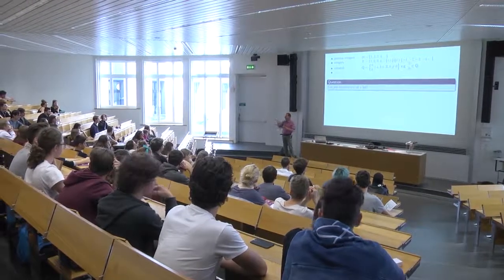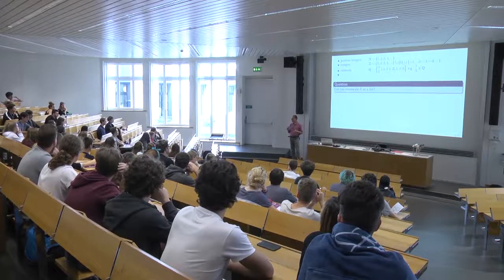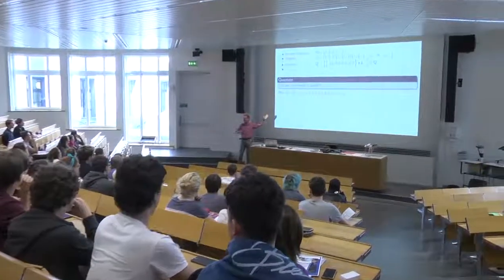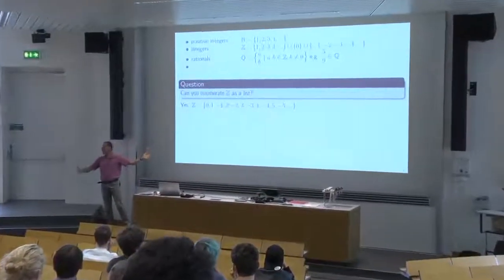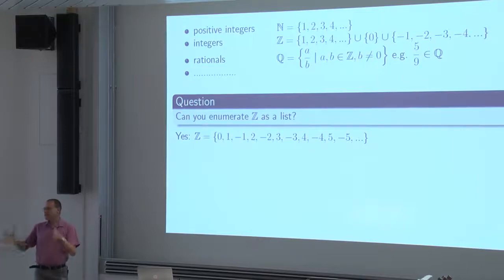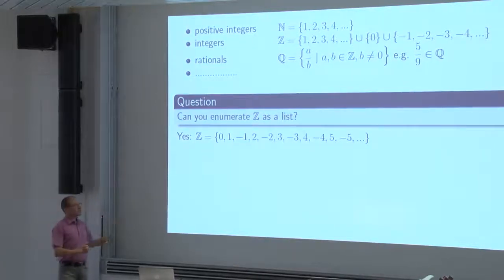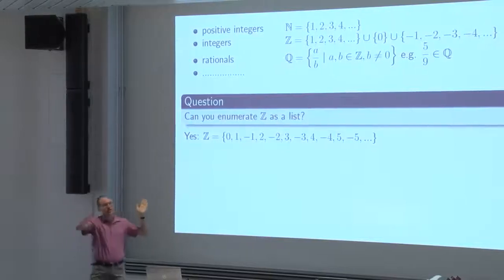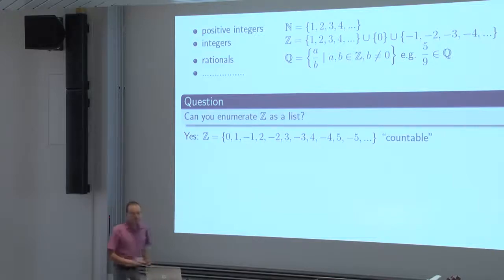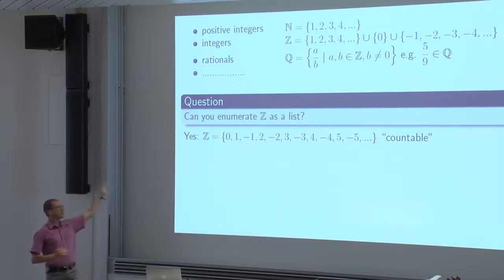I would say yes you can, if you start with zero and then take 1, minus 1, 2, minus 2, 3, minus 3, 4, minus 4, and so on. You put one integer in this box every day, and every integer sooner or later will appear in the box. Notice that they are not listed in an increasing order — you cannot list them in an increasing order because there is no smallest integer. But you can still make an infinite list out of them. We say that the set of integers is countable.